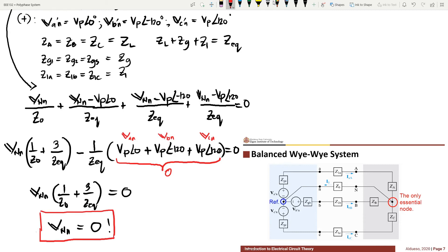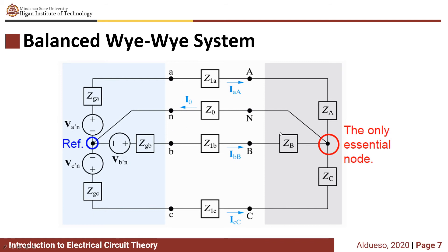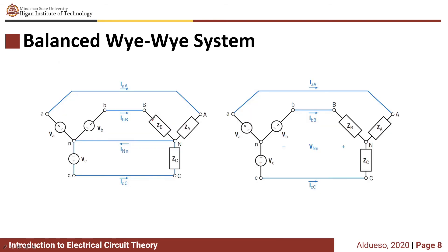So what does this tell us about the balanced Y-to-Y system? If you remember, when the voltage is equal to zero it is just equivalent to a short circuit. If VNN equals zero, this line is just like connecting a wire between the neutral lines. Looking at a four-wire Y-to-Y balanced system, VNN is zero — just like connecting a wire between the neutral lines.